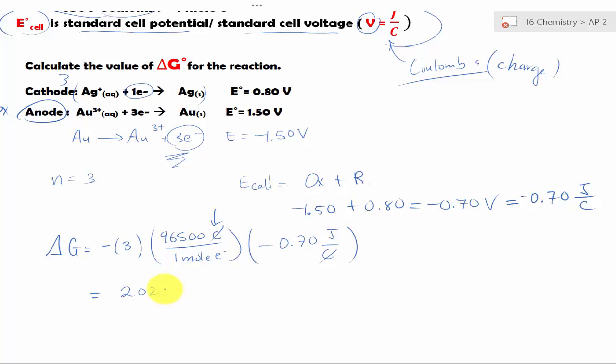We just plug into the calculator, and get 202,650 joules over mole of electrons.